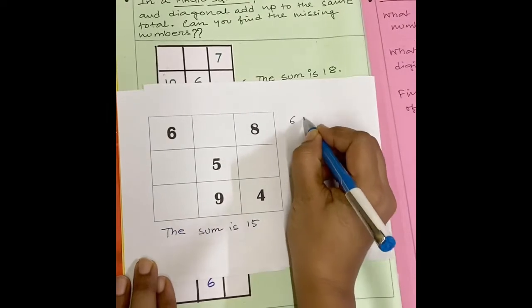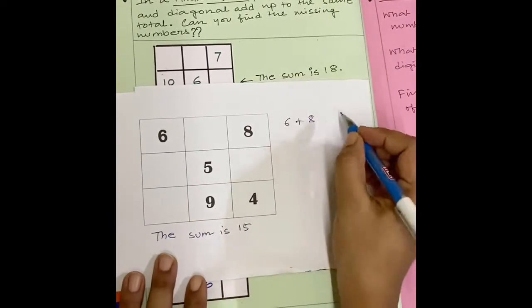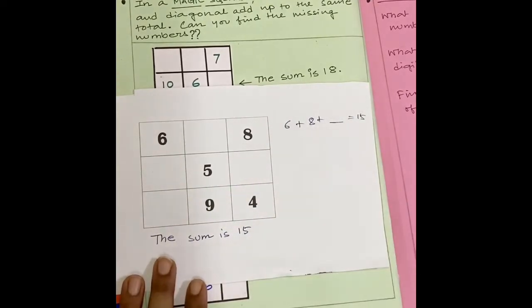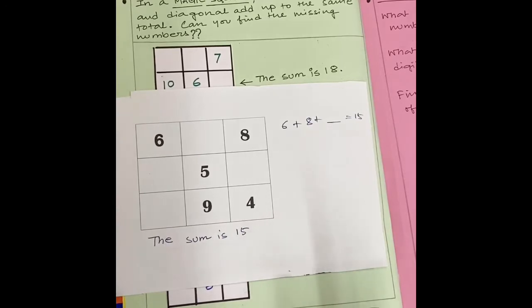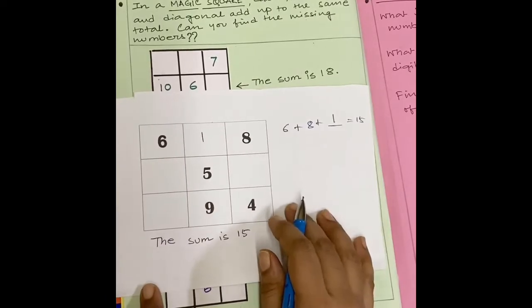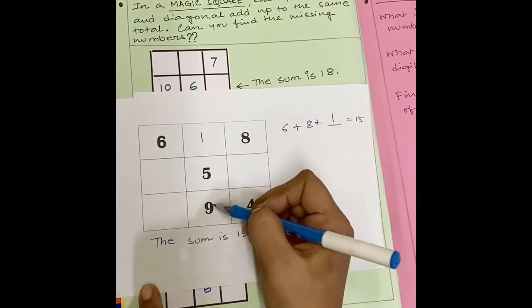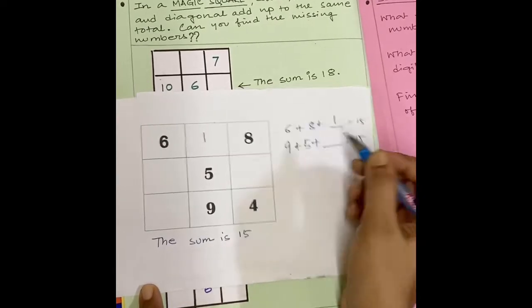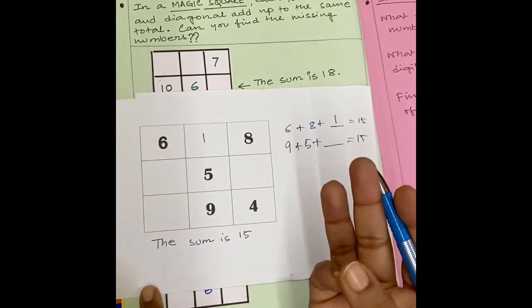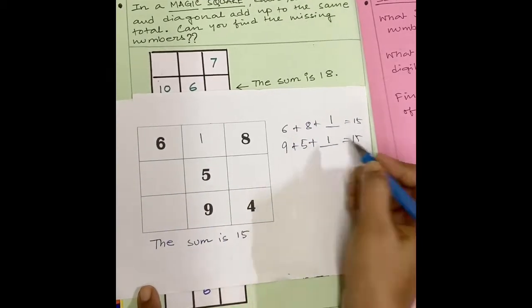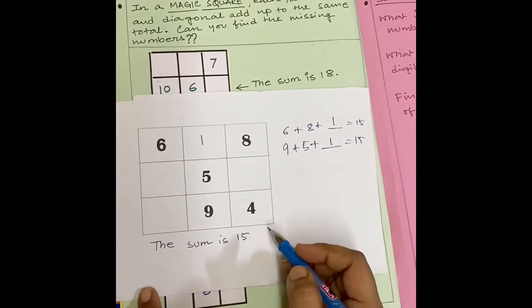So, 6 plus 8 plus how much will make 15? 6 plus 8, 6, 7, 8, 9, 10, 11, 12, 13, 14. 14 plus 1 is 15. So, I have to put 1 here. Now, 5 plus 9. 5, 6, 7, 8, 9, 10, 11, 12, 13, 14. 14 plus 1 is 15. So, this is correct.